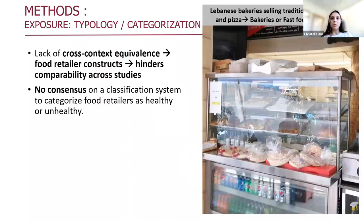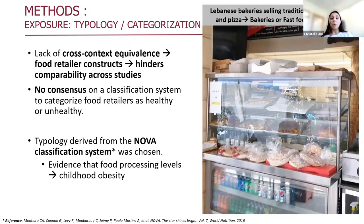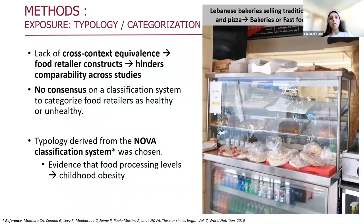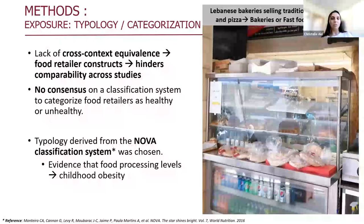After classifying retailers by type, we wanted to further categorize them based on healthiness level. However, there is no consensus on a classification system to categorize food retailers as healthy or unhealthy. This is why we developed our own typology derived from the NOVA classification system — a system that classifies food into four groups based on the extent of food processing levels. We opted for NOVA because some evidence showed that food processing levels might be a major driver of childhood obesity rather than the nutrient content of food items.